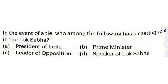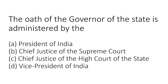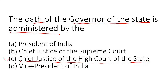In the event of a tie, who among the following has a casting vote in the Lok Sabha — the President, the Prime Minister, Leader of Opposition, or Speaker of Lok Sabha? In the event of a tie, the Speaker of Lok Sabha has the casting vote. The oath of the Governor of the State is administered by the Chief Justice of the High Court of that particular state.